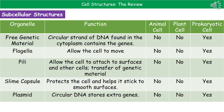The pili are tiny hair-like projections on the outermost surface. Their function is to allow the cell to attach to surfaces and to other cells, and when connected to other cells they use the pili to transfer genetic material between the two bacterial cells. Again, only found in prokaryotic cells. The slime capsule is all to do with protection — it protects the cell and stops it from drying out, and also helps it stick to smooth surfaces. Only found in prokaryotic cells.